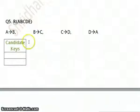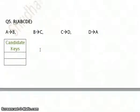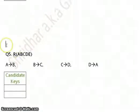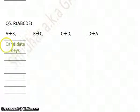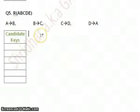This is question 5. This question is simple but has a trick for you to understand. I start with the same approach and try to find A's closure. What would be A's closure? A itself.